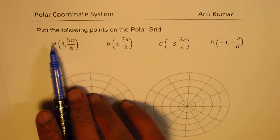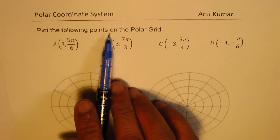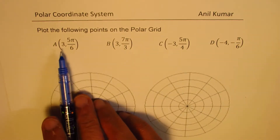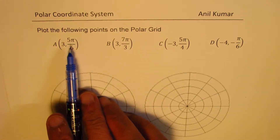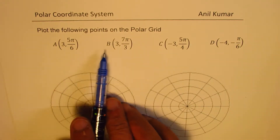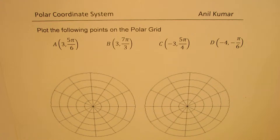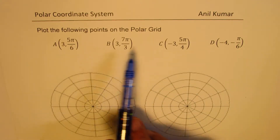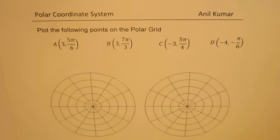We need to plot the following points on the polar grid: a is (3, 5π/6), b is (3, 7π/3), c is (-3, 5π/4), and d is (-4, -π/6). We have taken r and theta values as both positive and negative to give you variety.